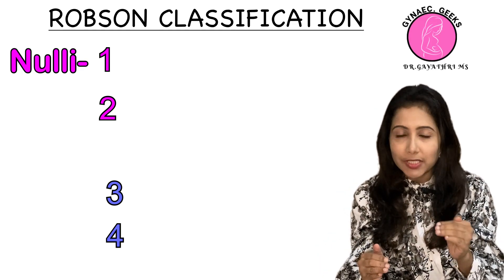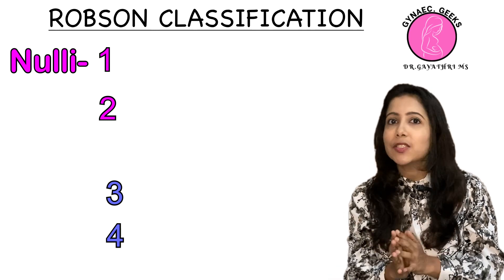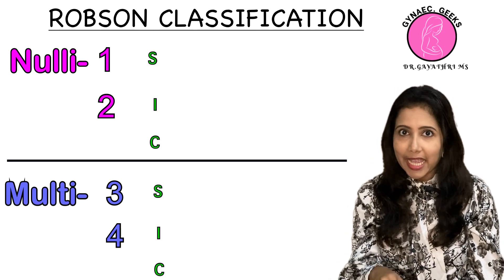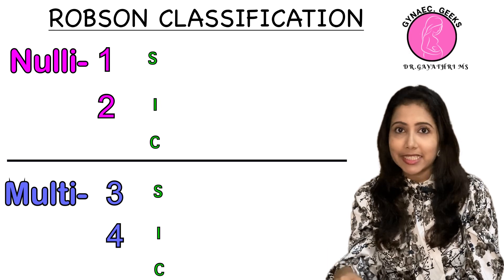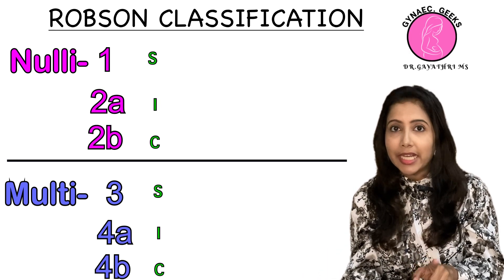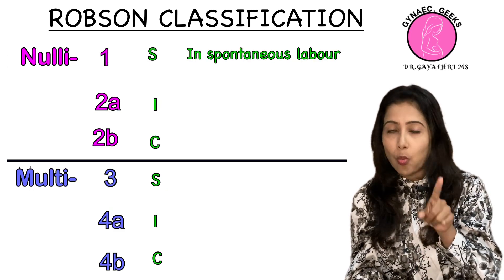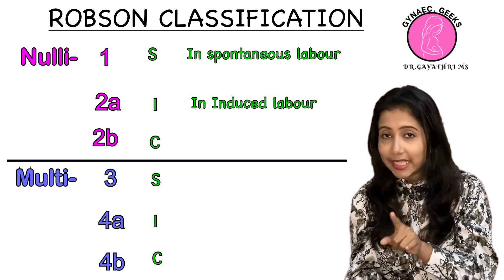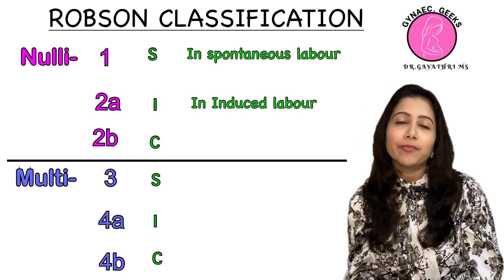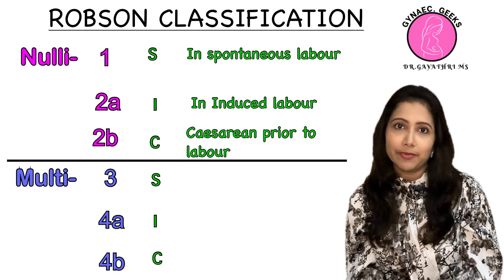Groups 1 and 2 are for a nulliparous female. Using the SIC mnemonic: Group 1 is a nulliparous female in spontaneous labour. Group 2A is a nulliparous female with induced labour. Group 2B is a nulliparous female with cesarean section prior to labour.